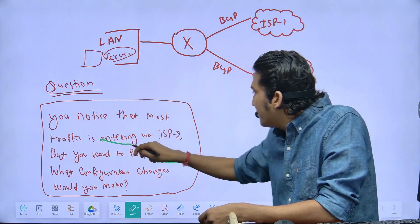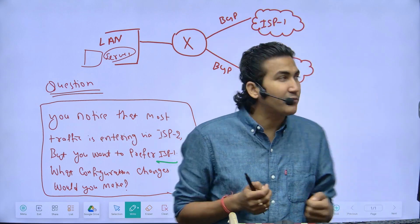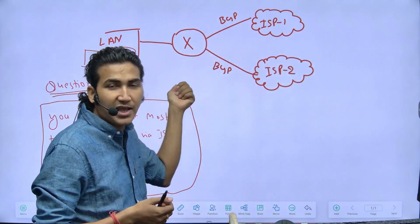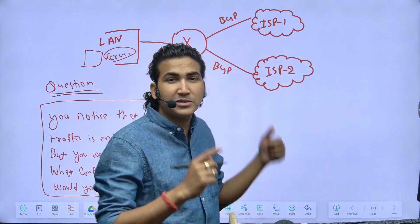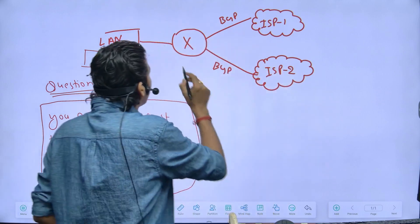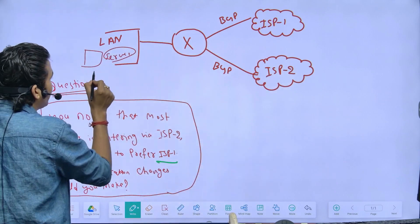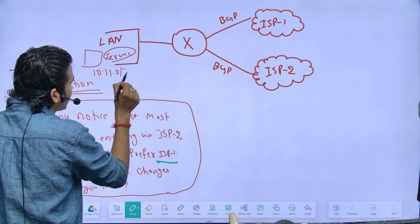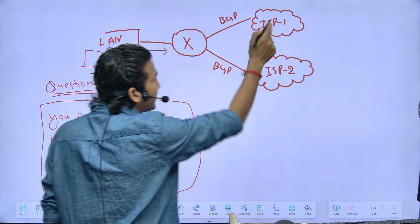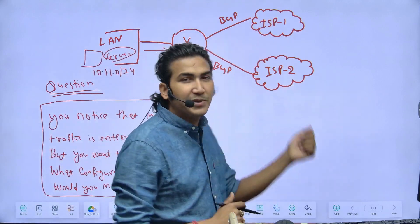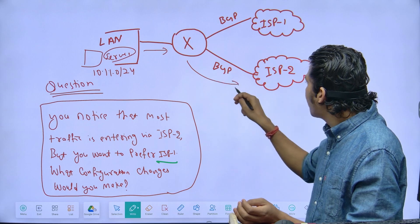It is clearly mentioned that traffic is entering via ISP 1 — this is talking about inbound traffic. If traffic is inbound, the route direction is actually outbound, meaning the route is going from inside to outside. For example, this server is in subnet 10.1.1.0/24, and the LAN device advertises it to the router, which then advertises it to both ISPs.